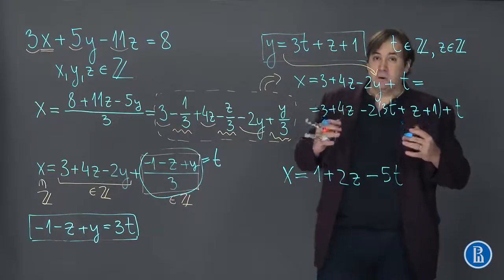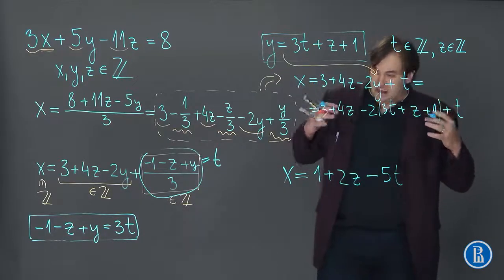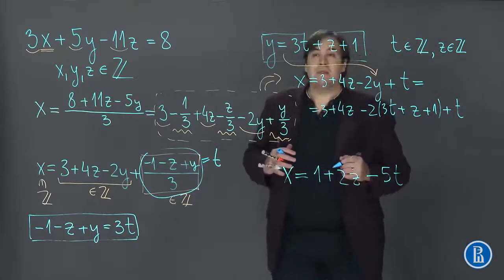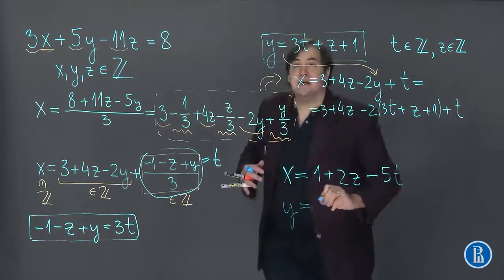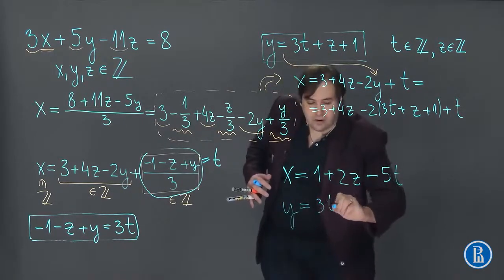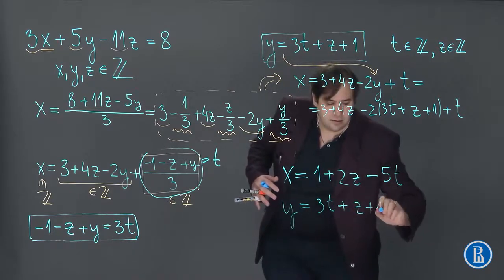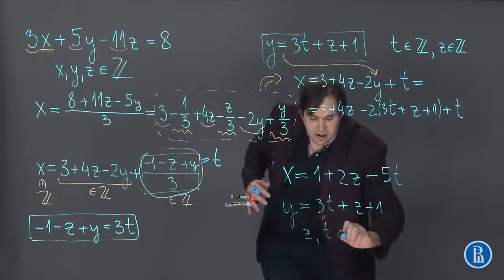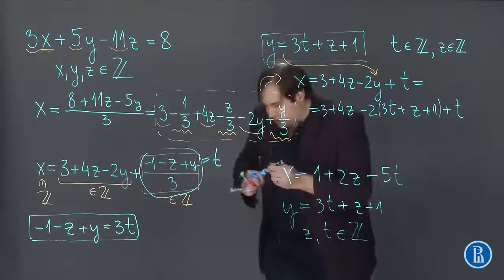I always check my own calculations for every problem I solve, for every task I solve. Finally, this is the answer where z and t are arbitrary integer numbers.